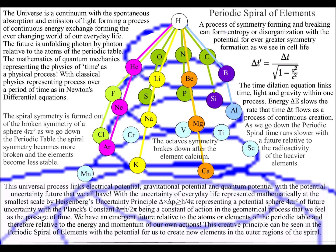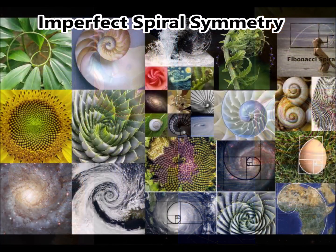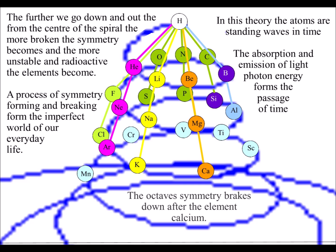As the spherical symmetry breaks, it has the potential to form the most beautiful of geometrical shapes, known as the Fibonacci spiral. The further we go down and out from the centre of the spiral, the more broken the symmetry becomes and the more unstable and radioactive the elements become.